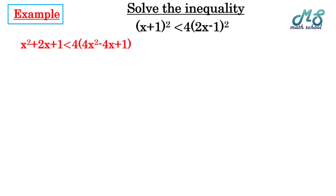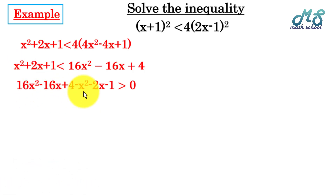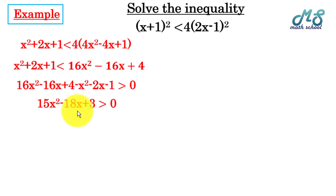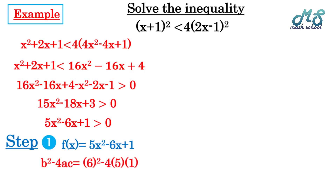Another example: solve (x + 1)² < 4(2x - 1)². Expand: x² + 2x + 1 < 4(4x² - 4x + 1). Using distributive property: x² + 2x + 1 < 16x² - 16x + 4. Move all terms to the right: 16x² - 16x + 4 - x² - 2x - 1 > 0. Collecting like terms: 15x² - 18x + 3 > 0.